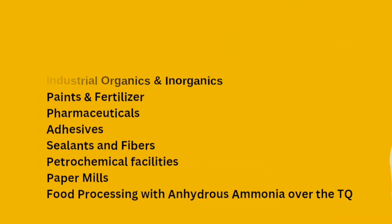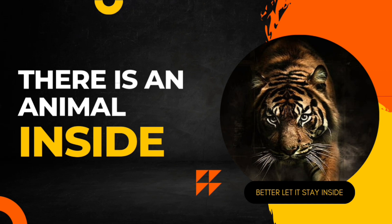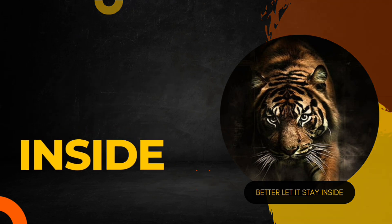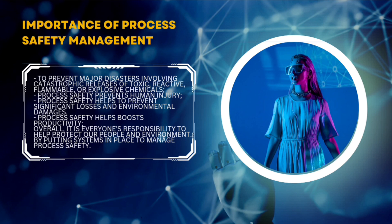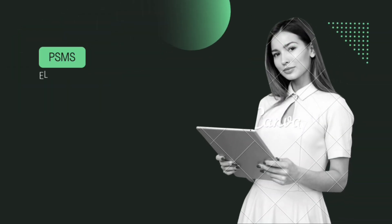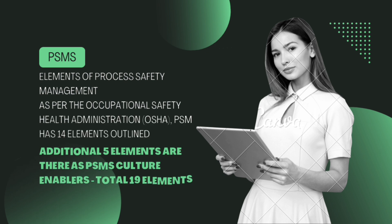This process safety management system — in this PSMS, we divide 14 elements. These 14 elements are the main core elements covering the performance and culture of the process safety management system. We add 5 elements as cultural enablers. We will discuss all 19 elements in this video.